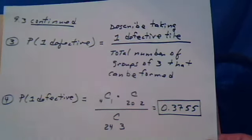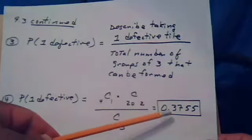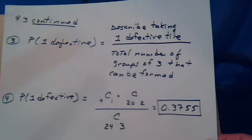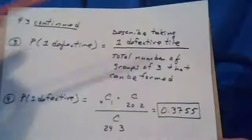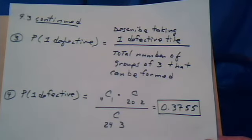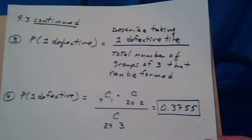You perform this division with your calculator, and it gives you this probability. This is the probability of getting one defective. So that's about a 38% chance of getting one defective.